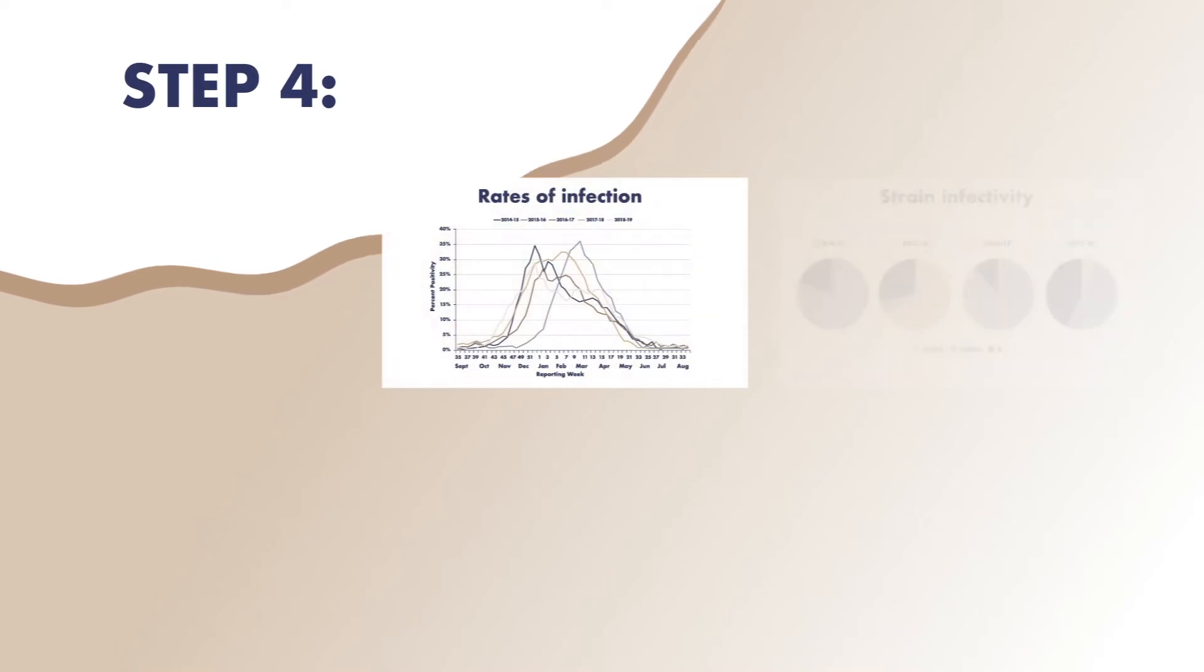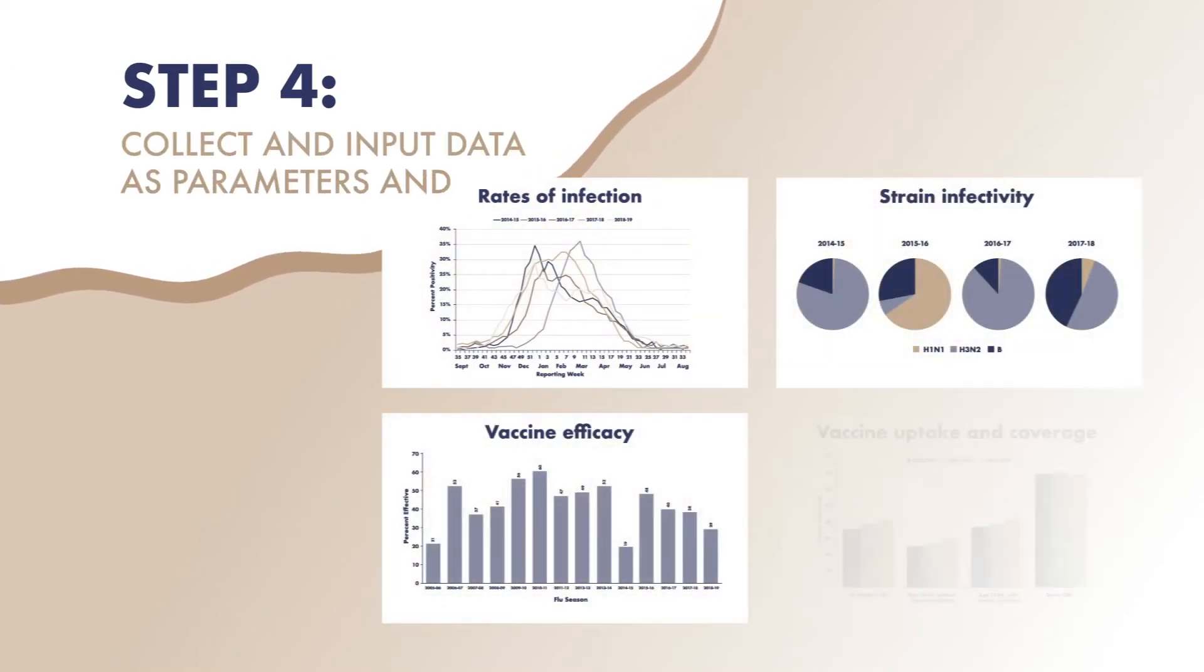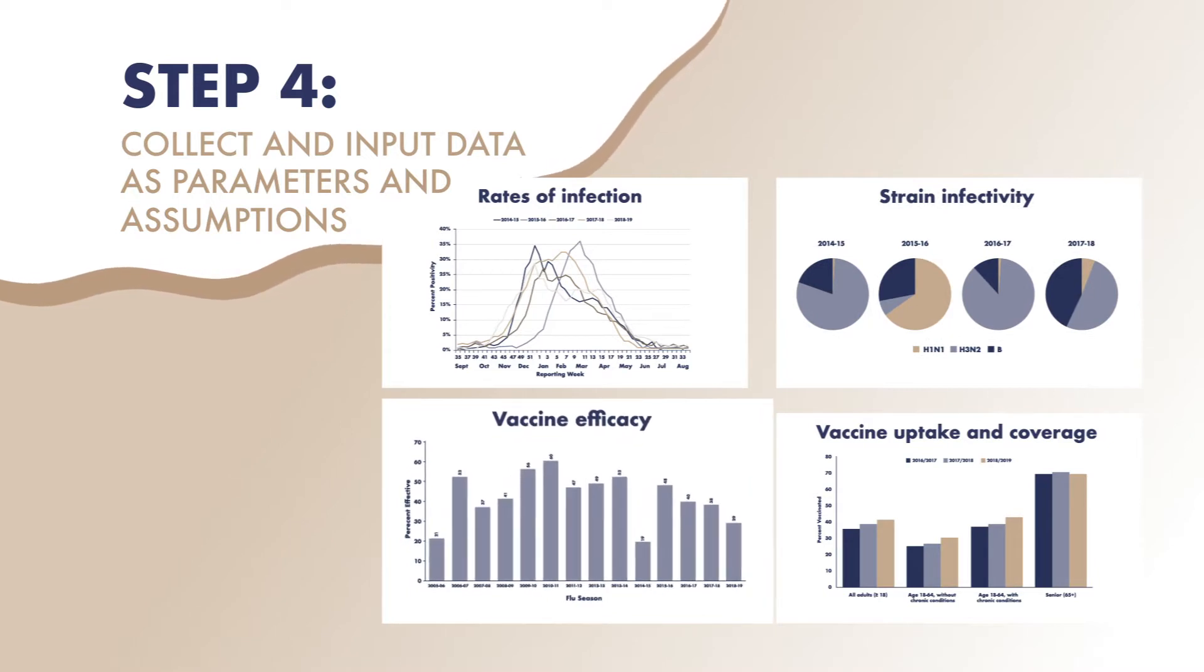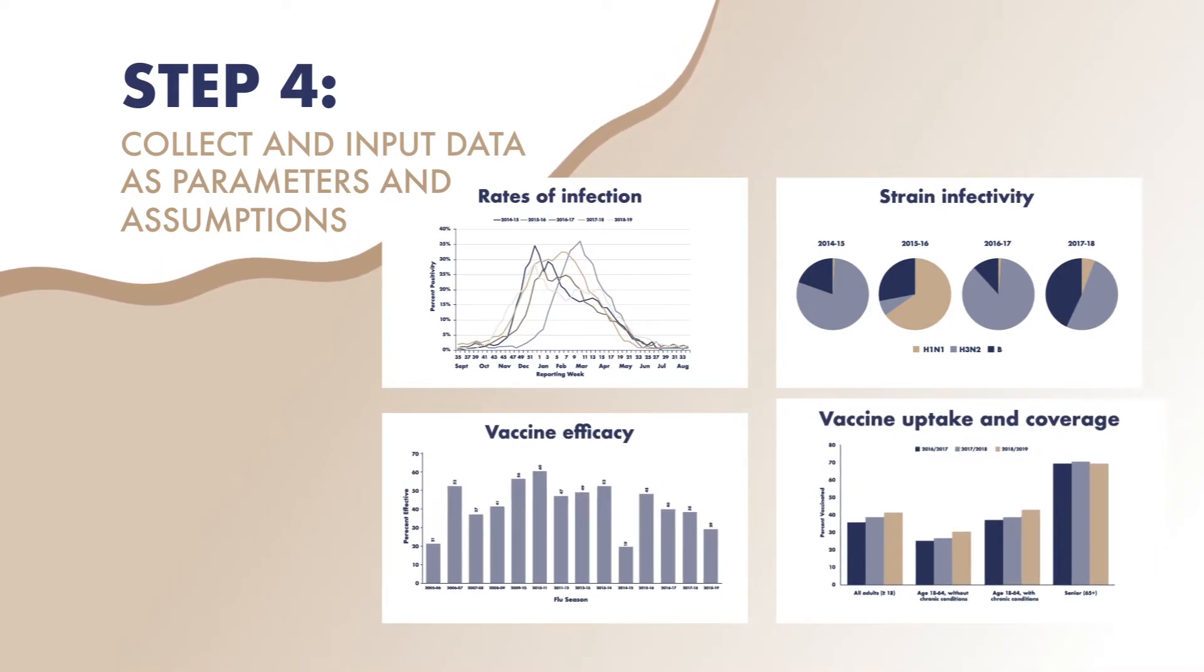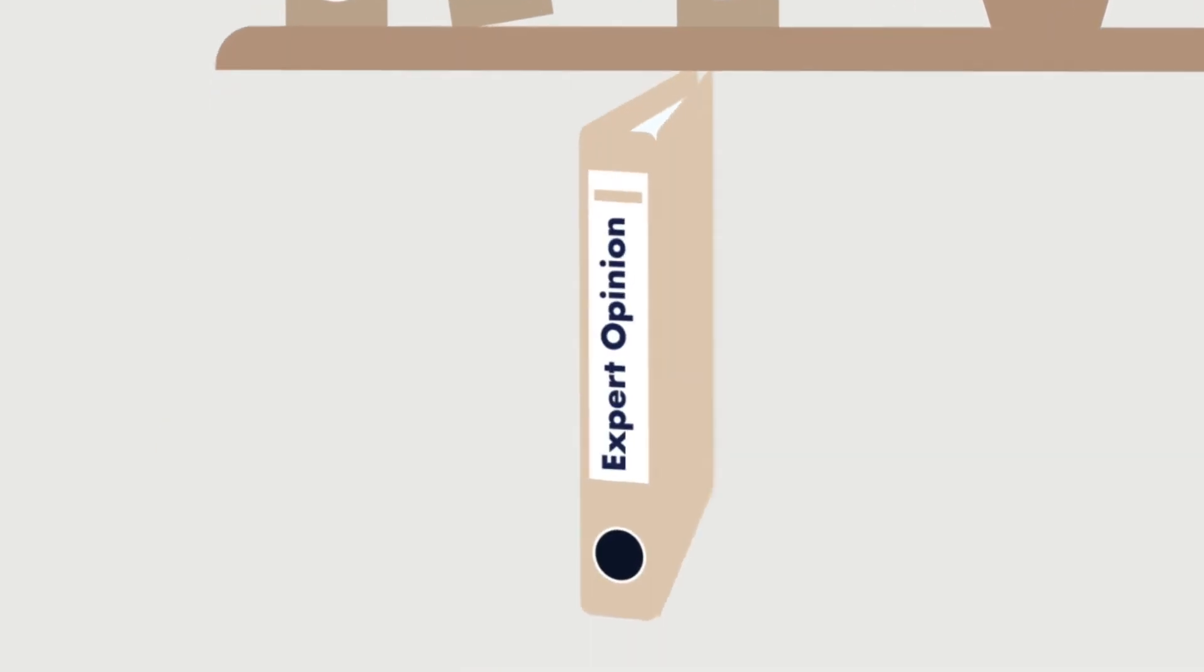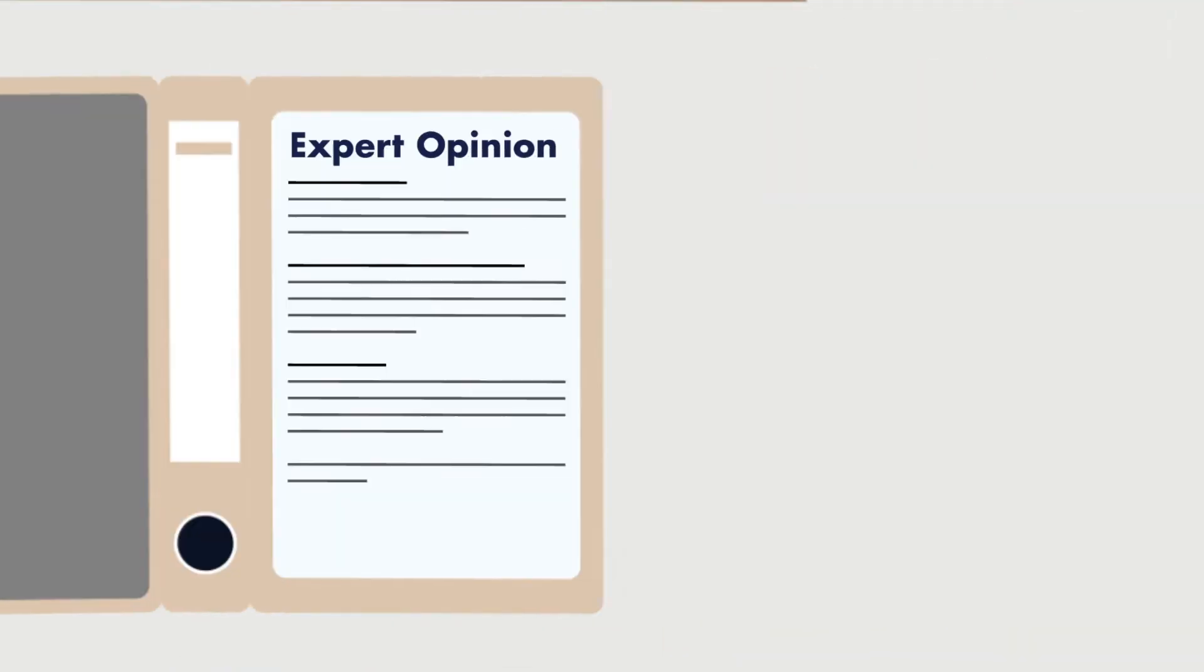Step 4: Collect and input data as parameters and assumptions. To answer our research question, data inputs can include rates of infection, strain infectivity, vaccine efficacy, and vaccine uptake and coverage. We can also use expert opinions on the vulnerability and resilience of the population.